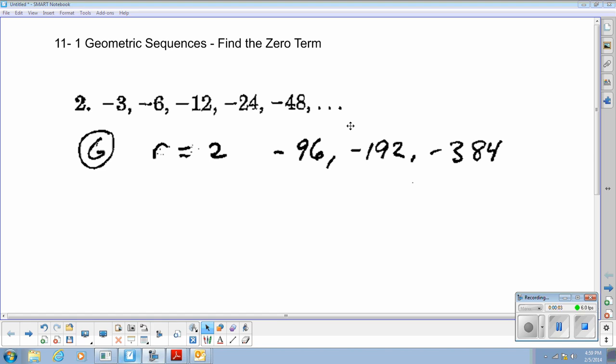Okay, next activity from Worksheet 11.1. We're going to keep going back to the geometric sequences and we're going to find zero terms. You found zero terms with arithmetic sequences, now we're going to do it for geometric.